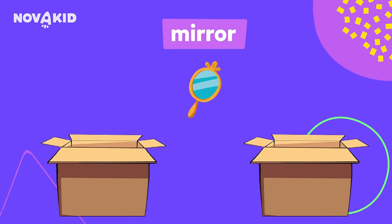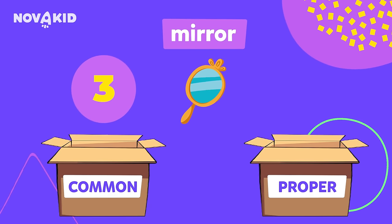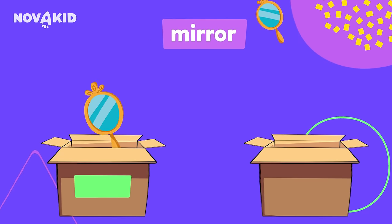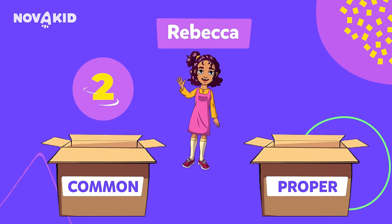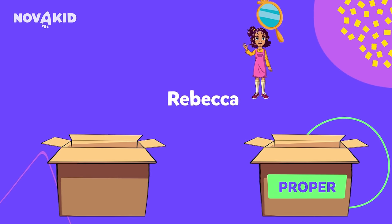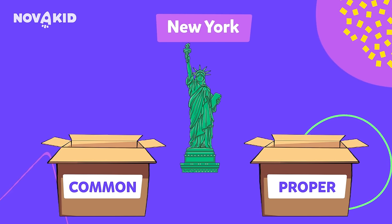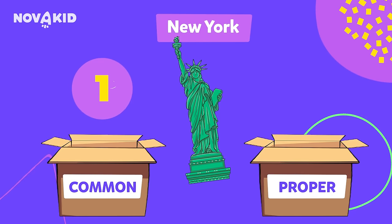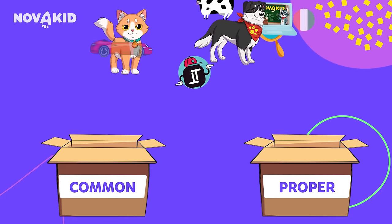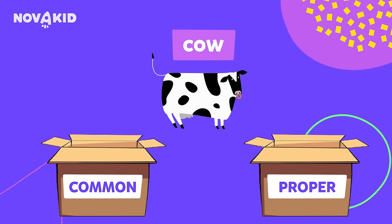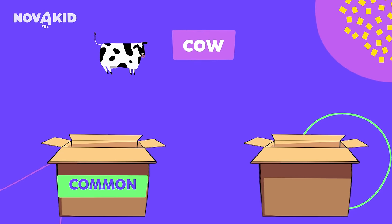Mirror. Is it common or proper? Common. Yes, of course. Rebecca. Proper. Excellent. New York — this is the name of a specific place, a city. New York is a proper noun. Cow. Yes, it is common. Well done.